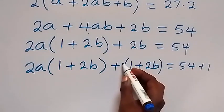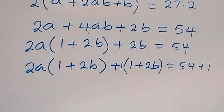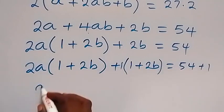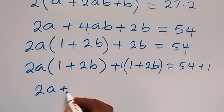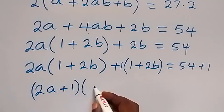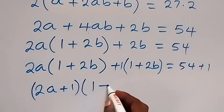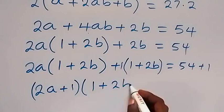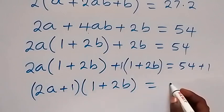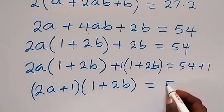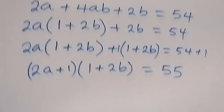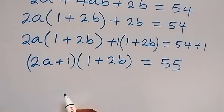Factoring out (1 plus 2b) as common, we are left with (2a plus 1) inside, giving us (2a plus 1) times (1 plus 2b) equals 55.